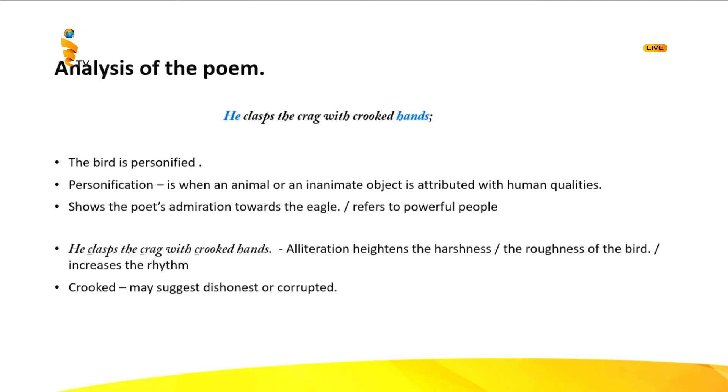Let's look at the second line: Close to the sun in lonely lands. Where is the bird? He is close to the sun — his mountain cliff is close to the sun. But is the bird actually close to the sun? No, it's physically impossible; the sun is millions of miles away from earth. The poet wants to emphasize the inaccessibility and the power of the bird — the bird is so powerful that he could even go near the sun. The eagle is above everyone else. The poet is also trying to say that the bird is alienated, detached, and aloof from the rest of the world. The technique here is hyperbole — extreme exaggeration or magnification — used to emphasize the power of the bird and its inaccessibility.